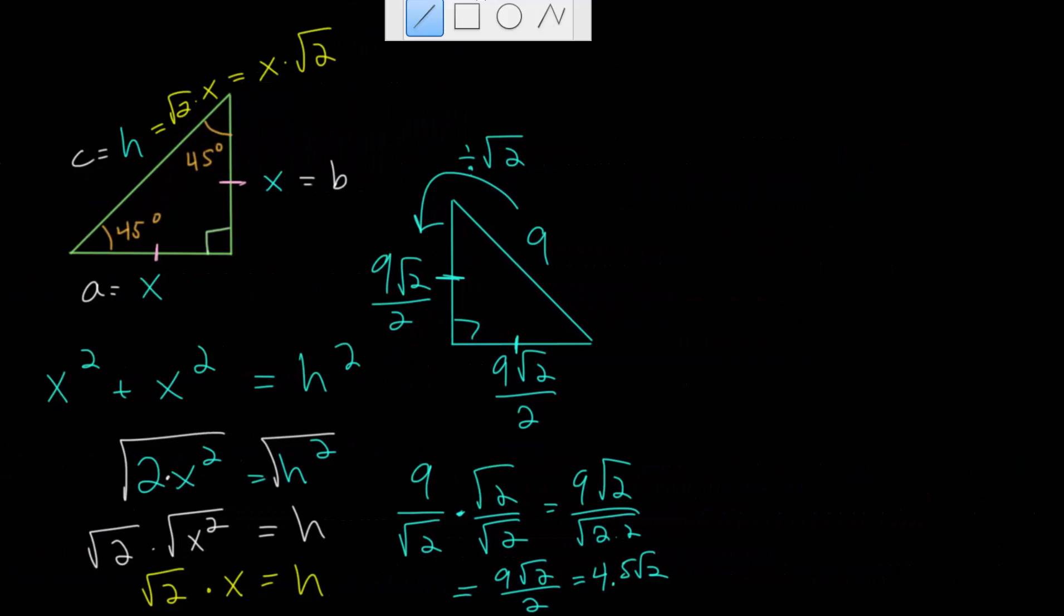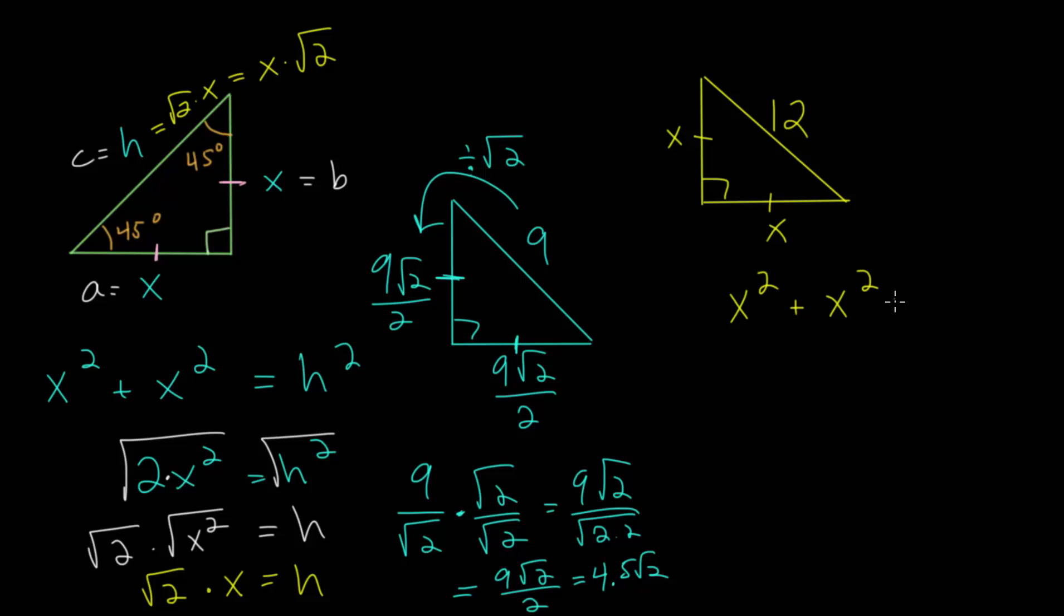Let's say we have, again, some random 45-45-90 triangle. And let's say that we just know the hypotenuse is maybe, let's say, 12. But we know these two sides are equal. So we can call this x and this x as well. And then set up the Pythagorean theorem. Let's say that x squared plus x squared is 12 squared. And simplify and solve.